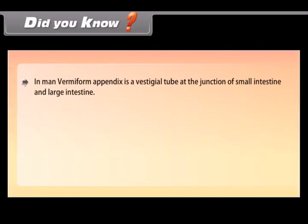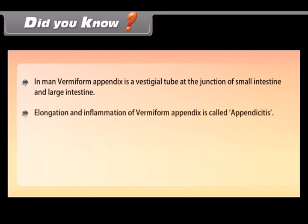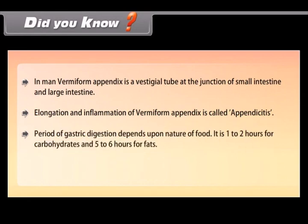In man, the vermiform appendix is a vestigial tube at the junction of the small intestine and large intestine. Elongation and inflammation of the vermiform appendix is called appendicitis. The period of gastric digestion depends upon the nature of food: it is 1 to 2 hours for carbohydrates and 5 to 6 hours for fats.